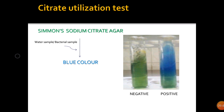The next test is the Citrate Utilization test, commonly employed as part of a group of tests that distinguish between members of the Enterobacteriaceae family based on their metabolic by-products. Citrate utilization can be used to distinguish between coliforms such as Klebsiella aerogenes, which occur naturally in soil and aquatic environments, and fecal coliforms such as Escherichia coli, whose presence would be indicative of fecal contamination.